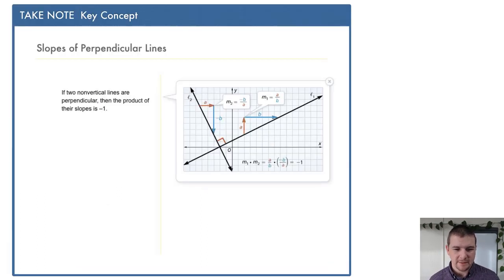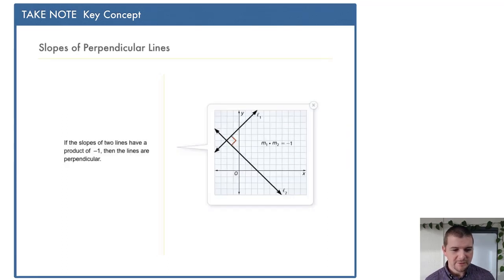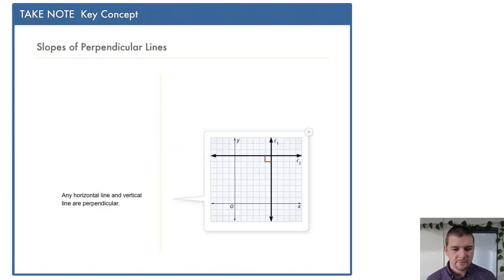Slopes of perpendicular lines. If two non-vertical lines are perpendicular, then the product of their slopes is negative 1. If the slopes of two lines have a product of negative 1, then the lines are perpendicular. And finally, any horizontal line and vertical line are perpendicular.